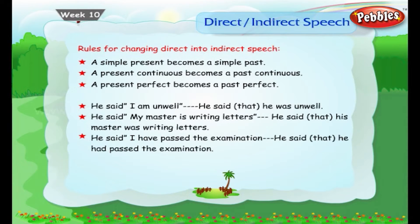There are some simple rules for changing direct into indirect speech. A simple present becomes a simple past. A present continuous becomes a past continuous. A present perfect becomes a past perfect.